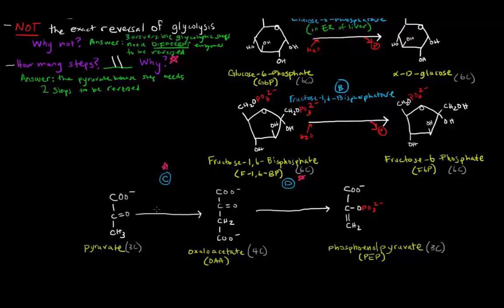The pyruvate kinase step needs two steps to be reversed. Going from phosphoenolpyruvate to pyruvate was one step in glycolysis, but in order to get from pyruvate back to phosphoenolpyruvate, we have to do it in two steps. The reason is that the pyruvate kinase step was highly exergonic — very spontaneous, releasing a lot of energy — so in order to reverse it, we have to input some energy and go through two steps.